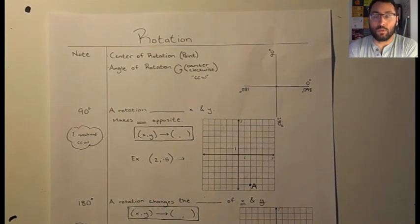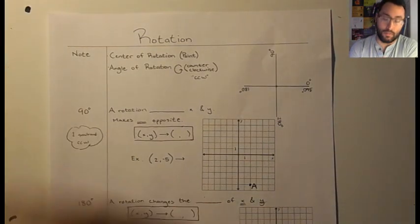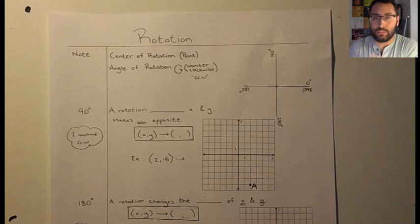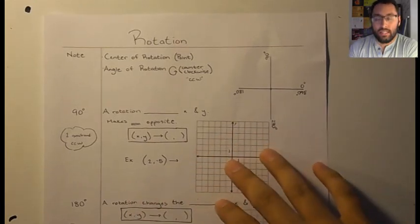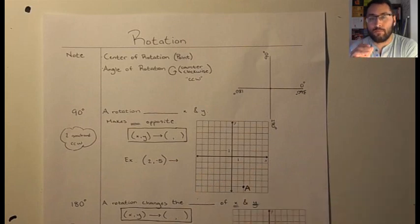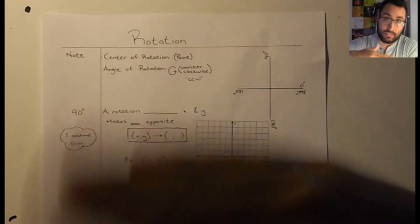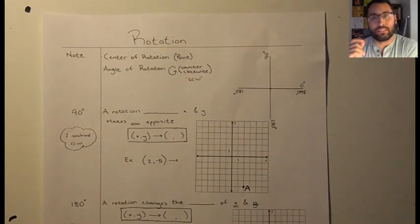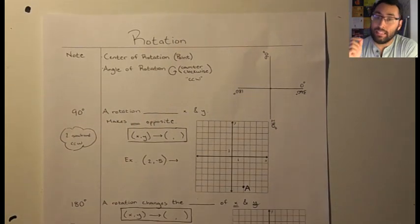Hey class, this video is on rotation. We just finished reflection. This is the new transformation that we're going to be talking about, where it is congruent. Now, a couple things that we have to talk about. For reflection, there was a line of reflection, and there were different lines that we could use. For rotation, we don't have a line. We need a point.